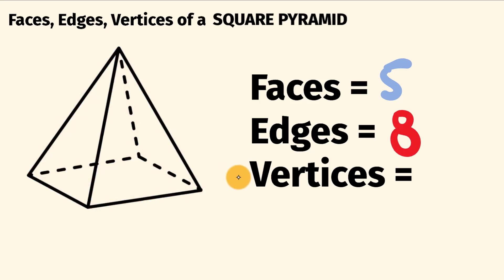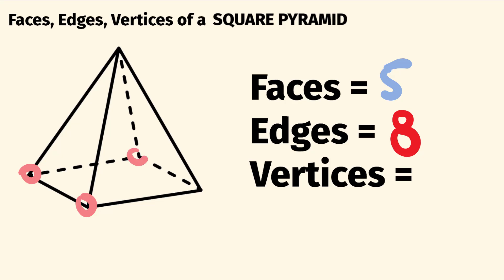Finally, to the number of vertices. These are the corners, the sharp bits. So we can go through and count these. Along the base here, we have one, two, three, four vertices. And at the top here, we have a special vertex which is known as an apex. So all together, we have five vertices.